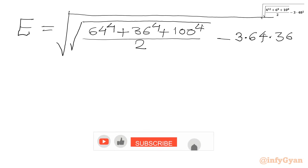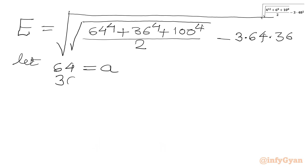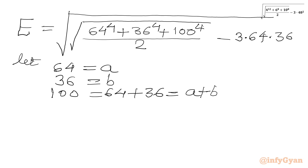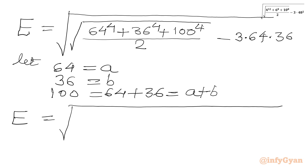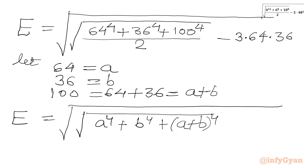Let me write this expression as E. Now we will let 64 equal A and 36 equal B, so we can write 100 equal to 64 plus 36, which is A plus B. So the expression becomes: square root of A to the power 4 plus B to the power 4 plus (A+B) to the power 4, over 2, minus 3 times A times B.